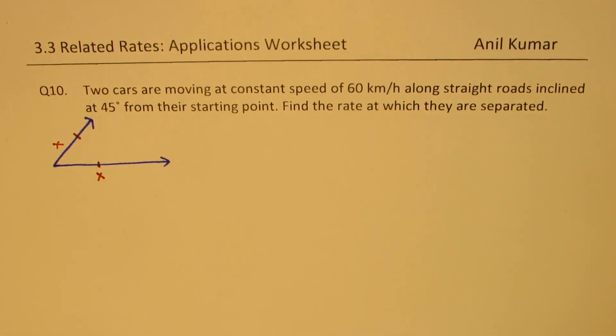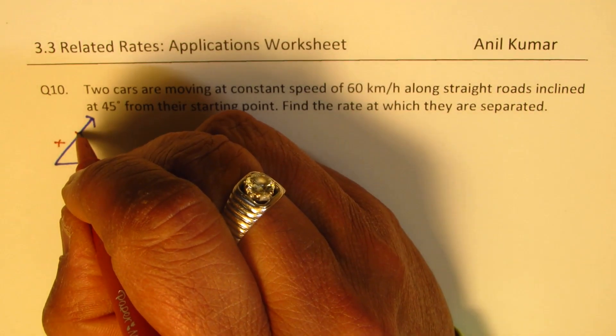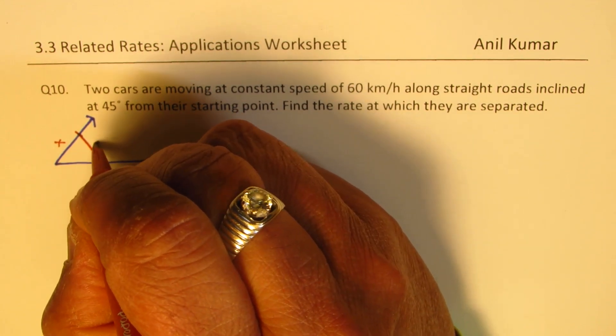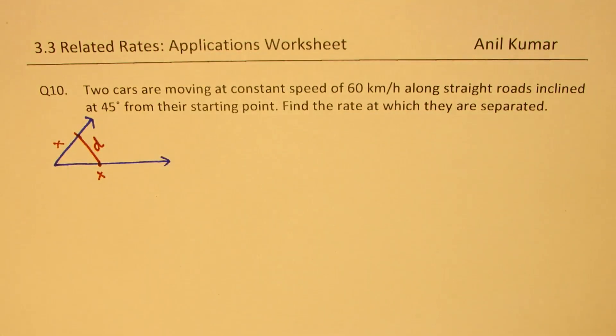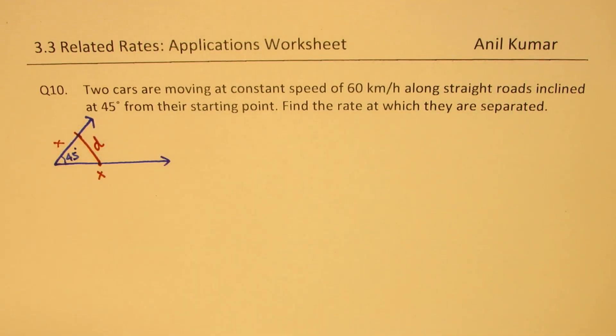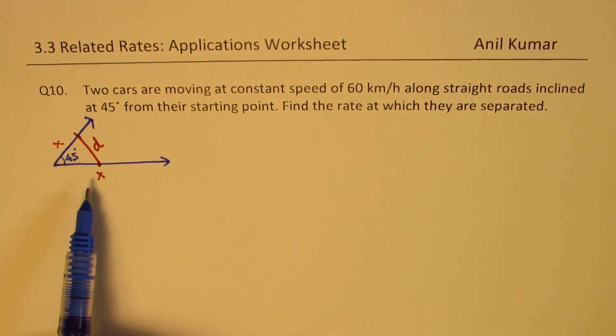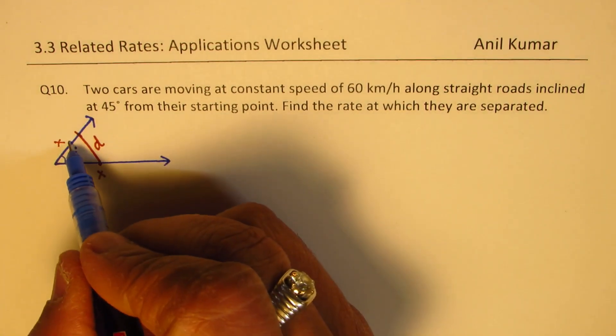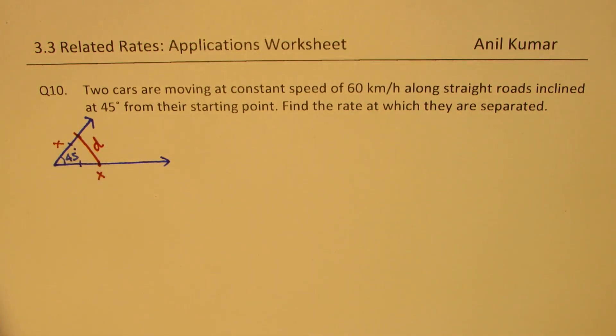What we are interested in finding out is what is their separation? What is the distance between them at any instance of time and how is this distance changing? We know that the angle is 45 degrees between the two roads. So basically we have an isosceles triangle as you can see. In this particular triangle we have one angle is 45 degrees and that is the situation.